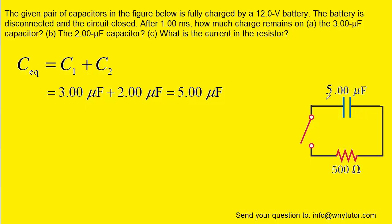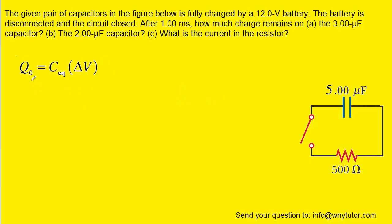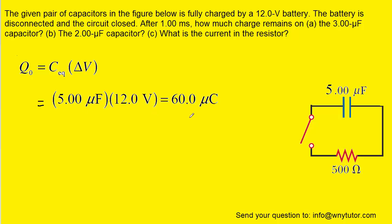We can redraw the circuit so that we have just one capacitor — a simplified version of the circuit. Next, we determine the total charge: the total charge on those two capacitors equals their equivalent capacitance times the potential difference supplied by the battery. Using the known potential difference and the equivalent capacitance we just found, the total charge turns out to be 60 microcoulombs.